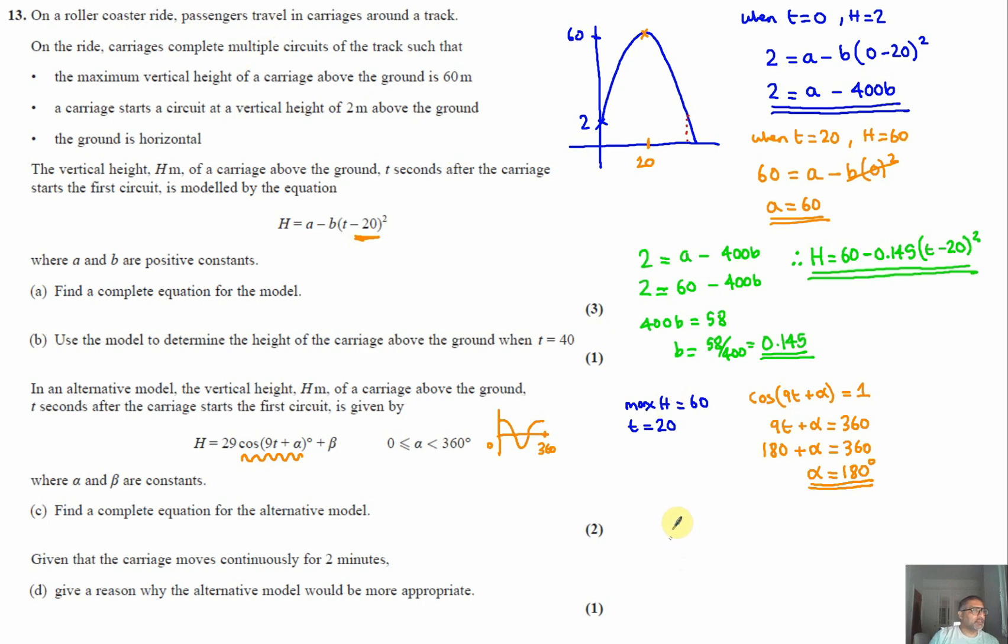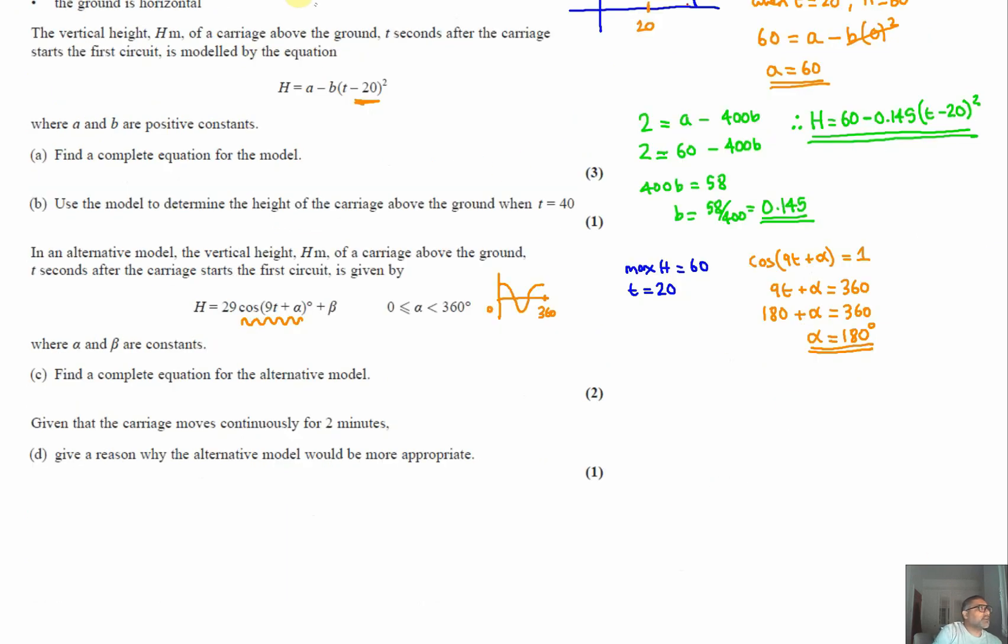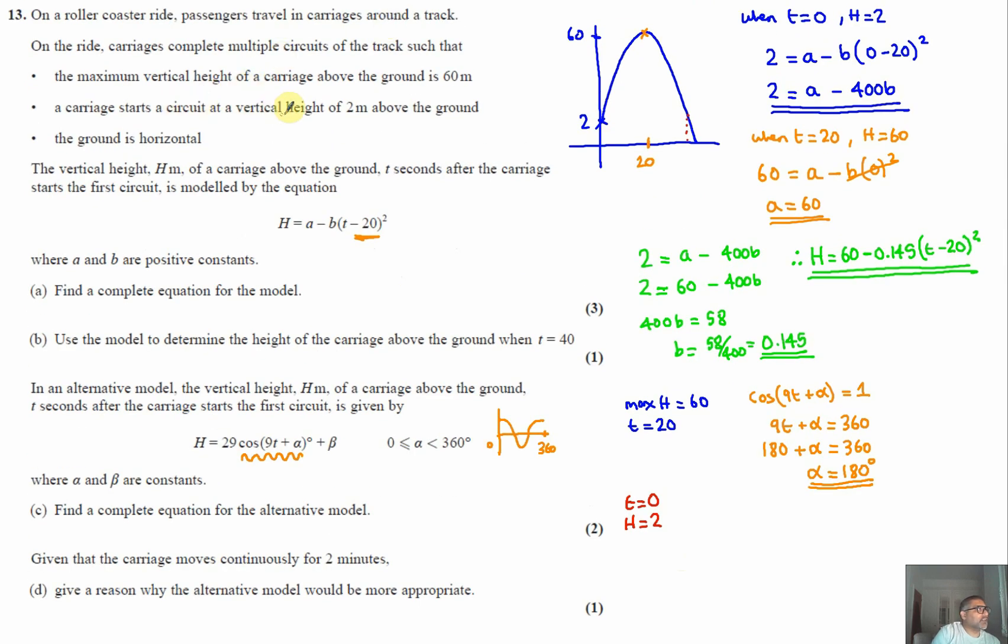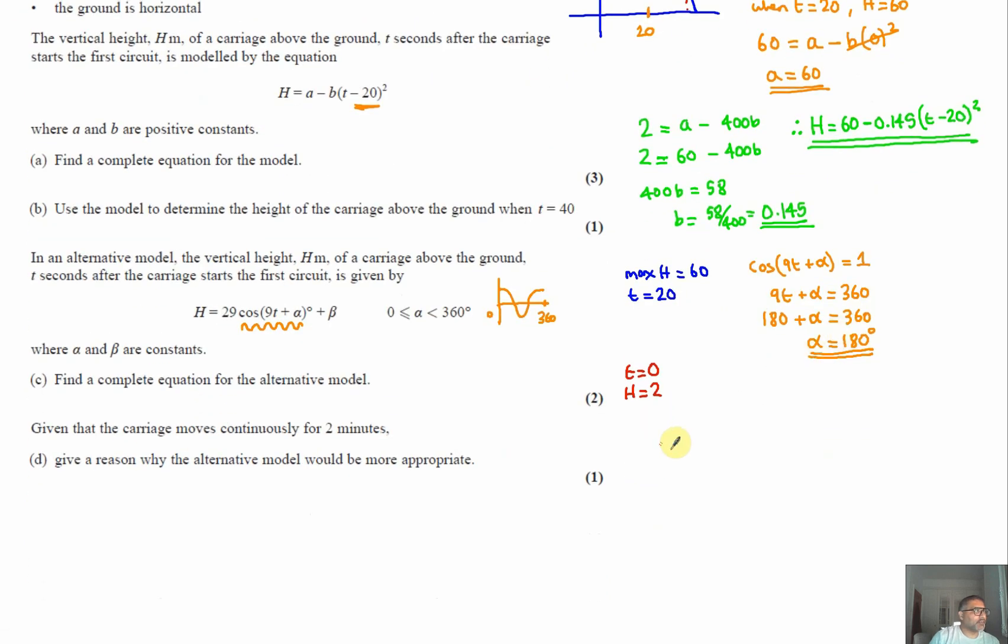And similarly to before as well, we said that when time equals 0, we know that h equals 2. The height is 2 meters, so from the question that's told us that it has a vertical height of 2 meters above the ground at the beginning.